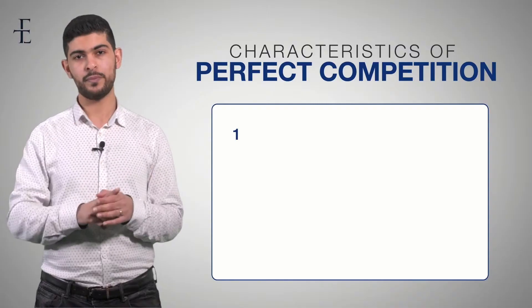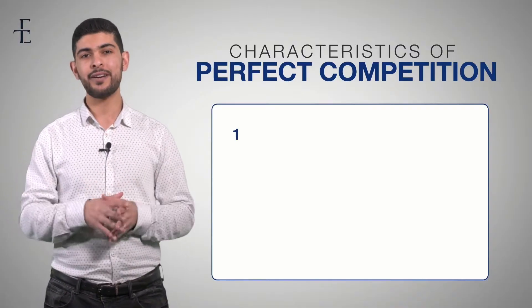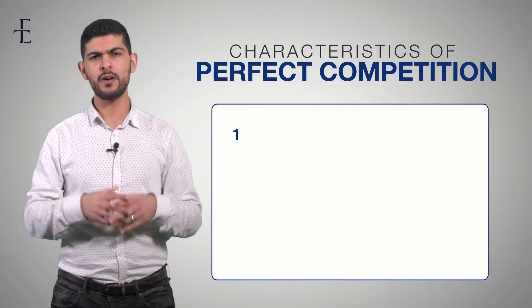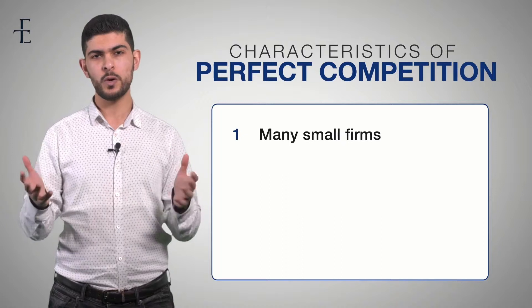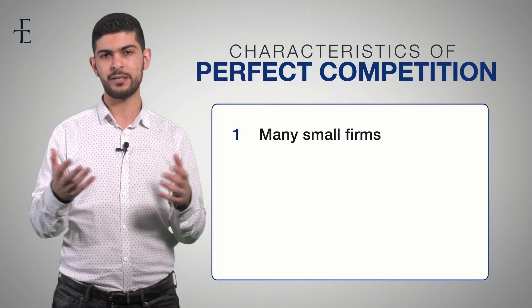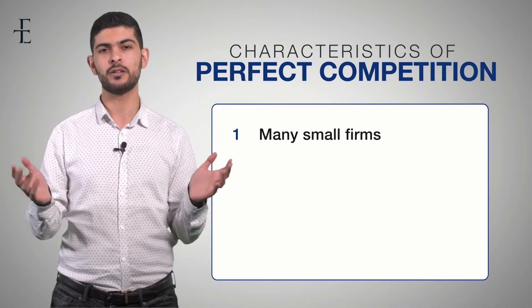Number one: the first characteristic is that there are many small firms. There are loads and loads of people selling this particular good.